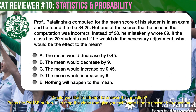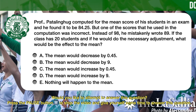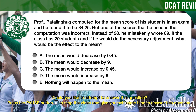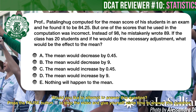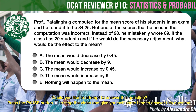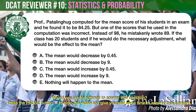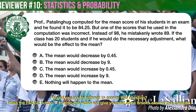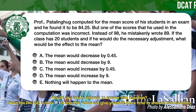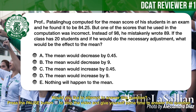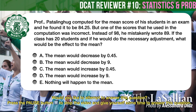Question number 5. Professor Paddling computed the mean score of his 20 students in an exam and found it to be 84.25. But one score used in the computation was incorrect — instead of 98, he mistakenly wrote 89. If he would make the necessary adjustment, what would be the effect on the mean? A: decrease by 0.45. B: decrease by 9. C: increase by 0.45. D: increase by 9. E: nothing will happen to the mean.